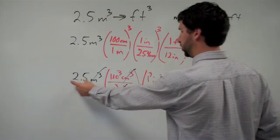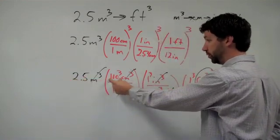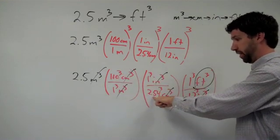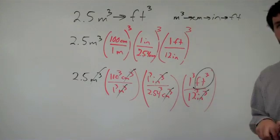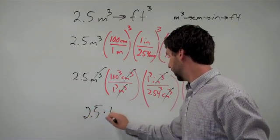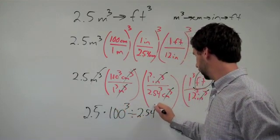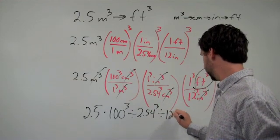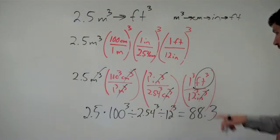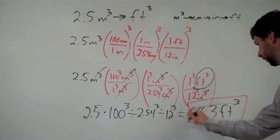So to calculate this final answer, we're going to take 2.5 times 100 cubed. Don't forget to cube it. Divided by 2.54 cubed, divided by 12 cubed. That would look like 2.5 times 100 cubed divided by 2.54 cubed divided by 12 cubed. And when you do so, you should get something like 88.3. The unit we're left with is feet cubed, and that is our final answer.